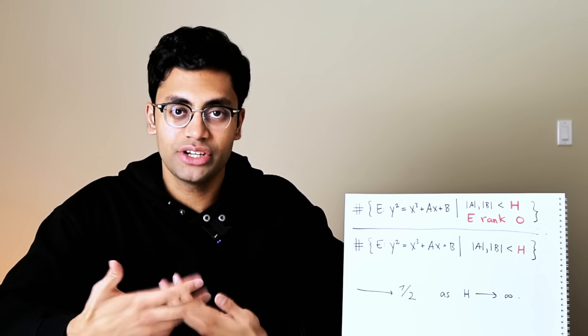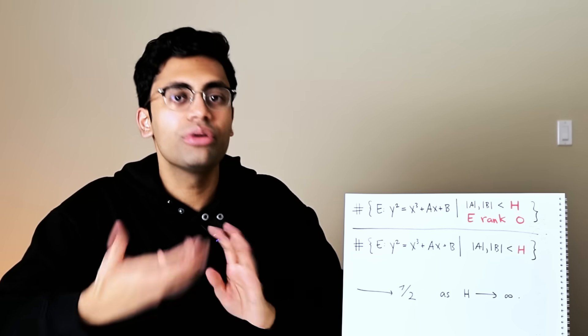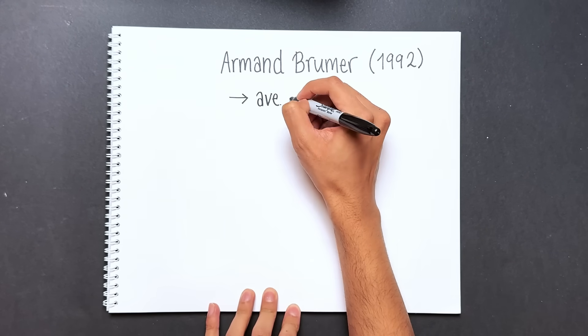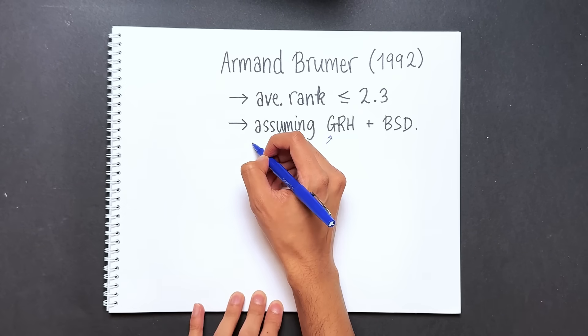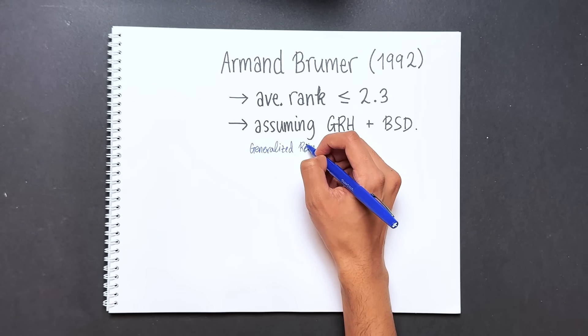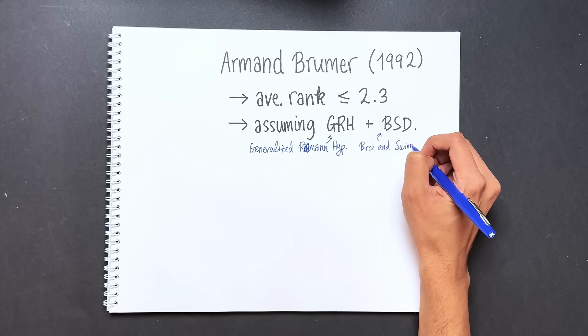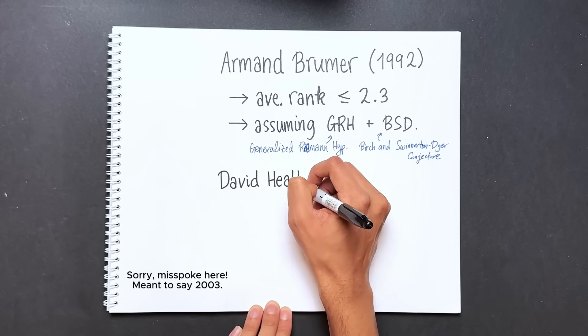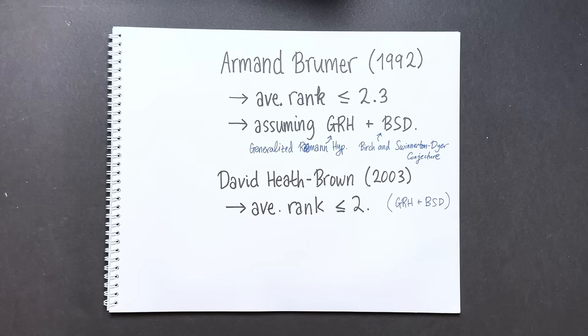However, a lot of people have been working towards it and we do know a few things. The first big breakthrough came in 1992 when the mathematician Armand Brumer showed that the average rank of elliptic curves was at most 2.3. However, this proof assumed two big conjectures to be true: the generalized Riemann hypothesis, which is a stronger version of the Riemann hypothesis, and the Birch and Swinnerton-Dyer conjecture, which is one of the millennium problems. Then in 2004, David Heath-Brown refined Brumer's techniques to lower the bound to 2, still assuming GRH and BSD. And in 2006, Matthew Young improved the bound to 25 over 14, again conditional on these two conjectures.